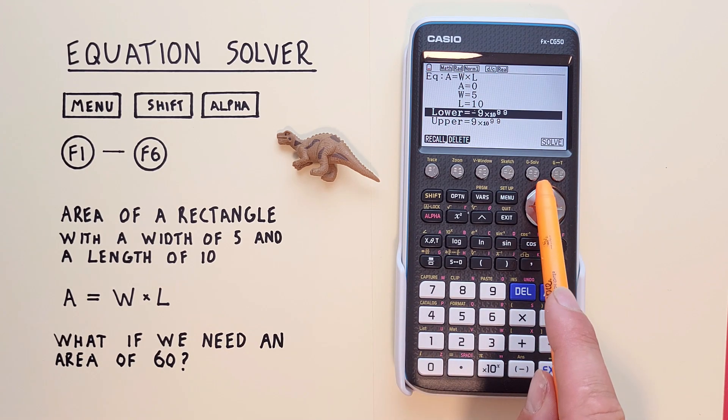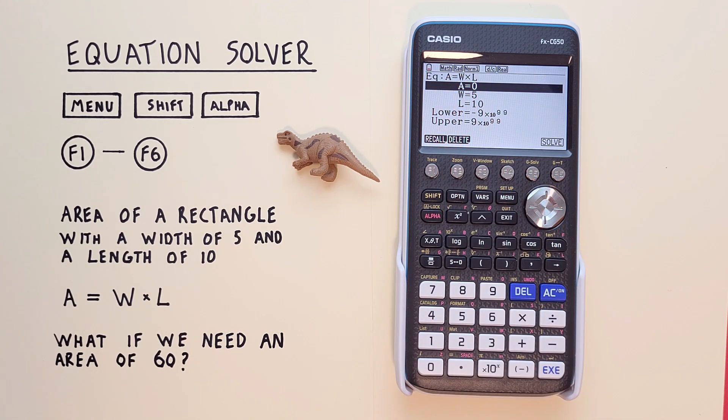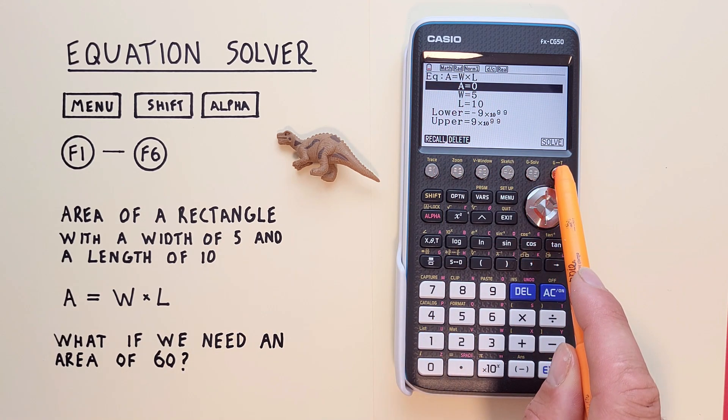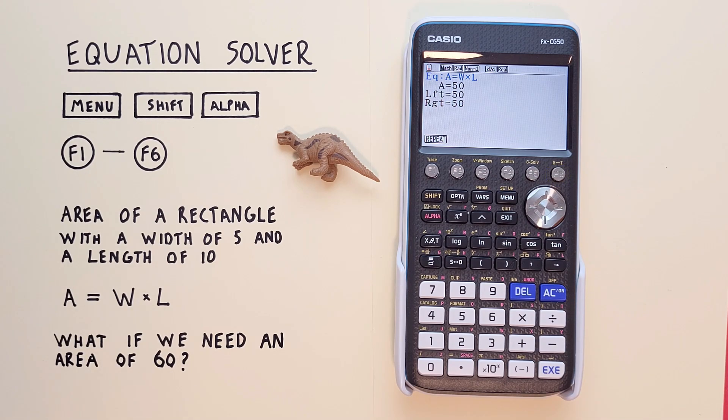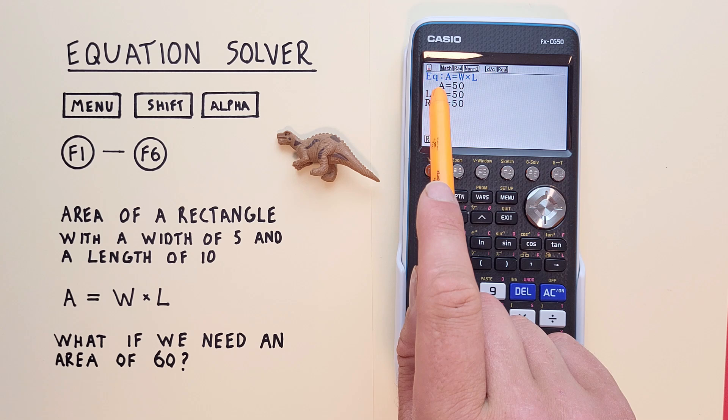And then scroll up to what we want to solve for, which was the A for area. And hit F6 for solve. And there we go, we get A is equal to 50.